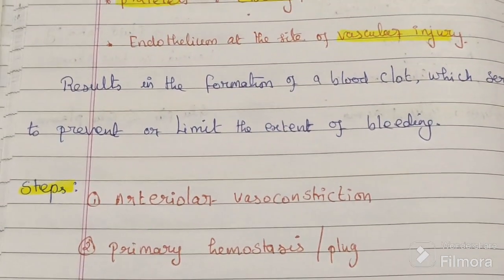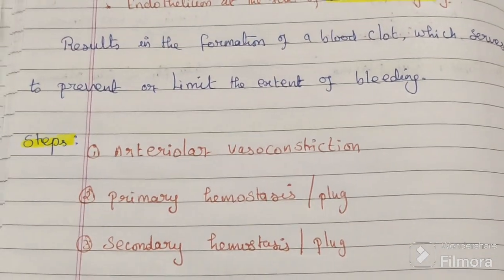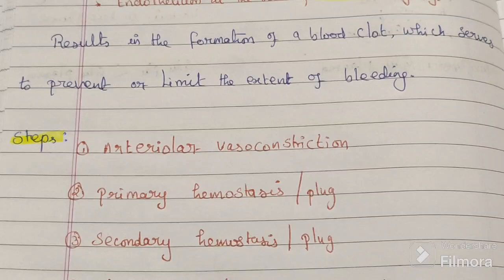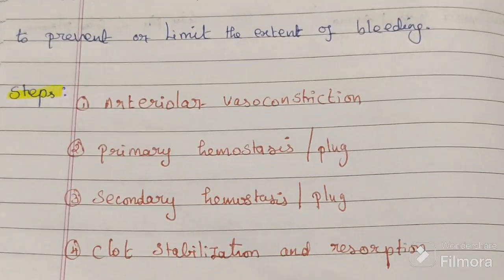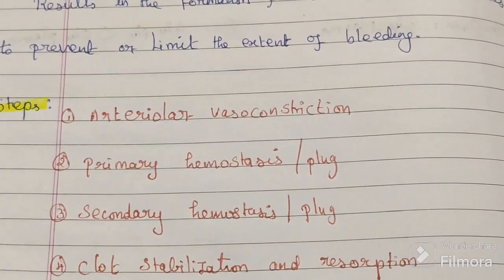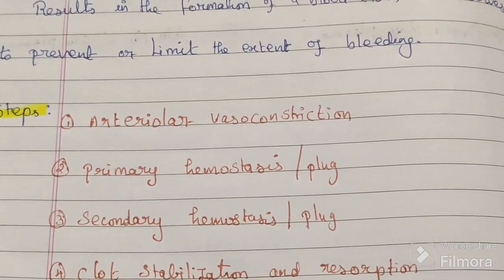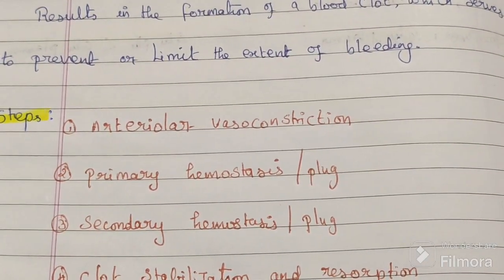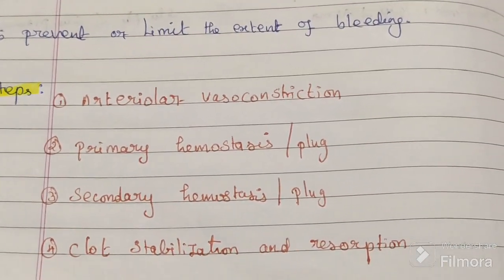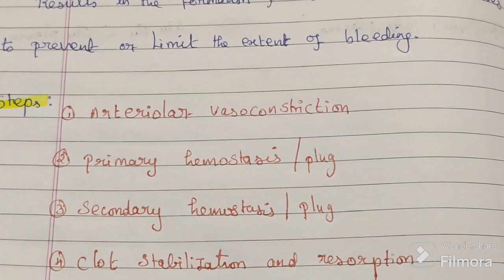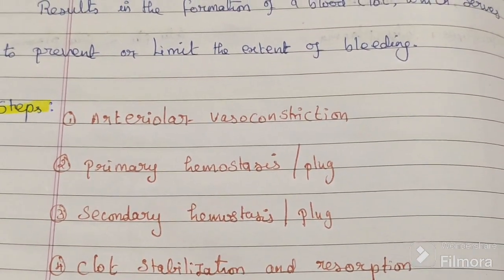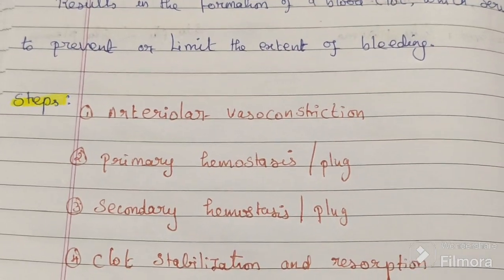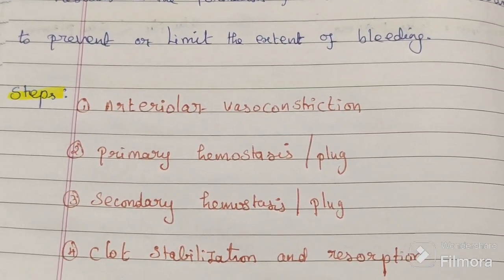There are four steps in how the hemostasis process takes place: one is vasoconstriction, second is primary hemostasis or primary clot formation, third is secondary clot formation, and fourth is clot stabilization and reabsorption.